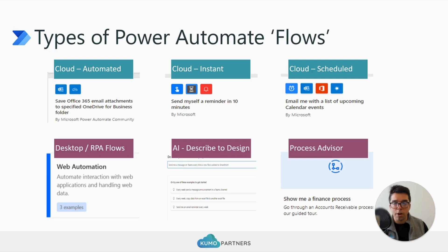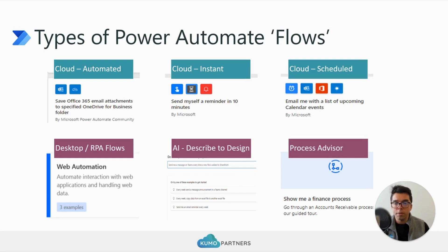There is another section of Power Automate we won't cover in this course, but worth summarizing: Desktop RPA Flows. Where Cloud Flows run on connectors available through online services, Desktop RPA Flows are meant to connect to mechanisms, files, or components on a machine — your local machine. For example, opening a web page and scraping information, or at a more scalable level, running on a virtual machine processing files or receiving PDFs and sending them elsewhere.